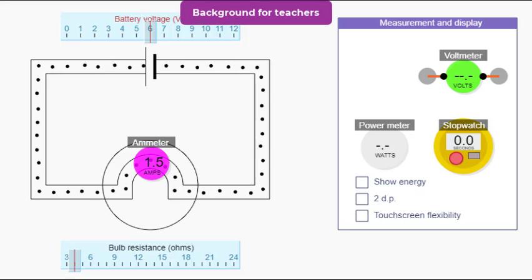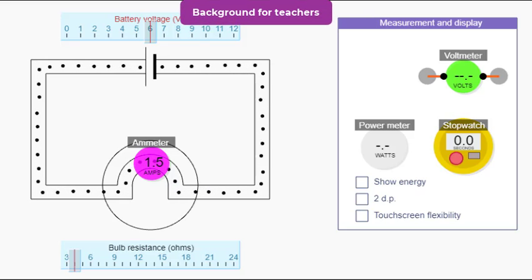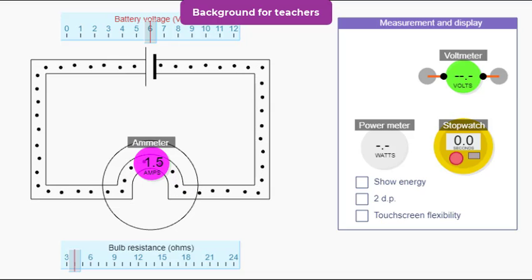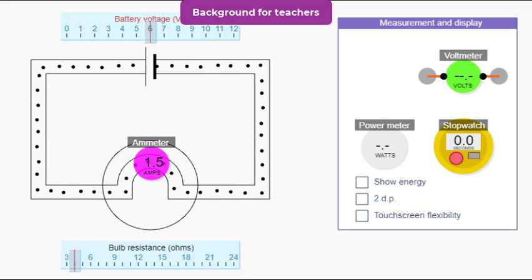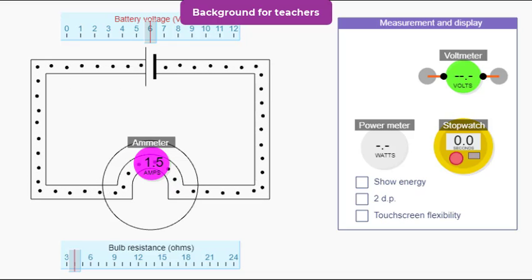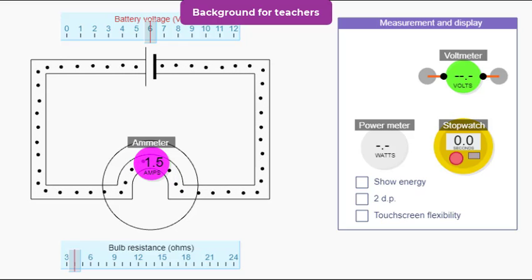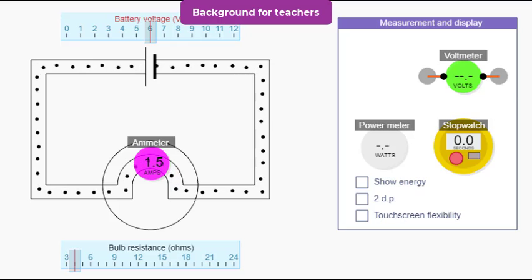Each little black dot in our simulation represents one coulomb of charge, and the simulation is designed so that the charges move at about the right speed to represent the current shown on the ammeter. We can use this to show two useful relationships: charge equals current times time, and current equals charge over time.